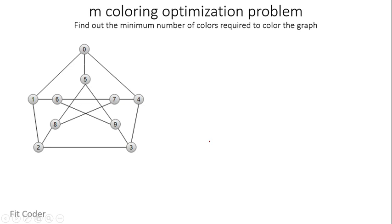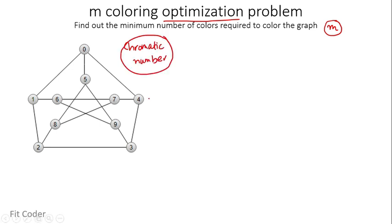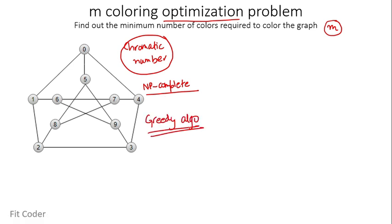The last category is the M coloring optimization problem, where we find the minimum number of colors required to color the graph — finding the value of M. The smallest number of colors required is known as the chromatic number. Finding the chromatic number is NP-complete, so there is no efficient algorithm. There are only approximate algorithms available.